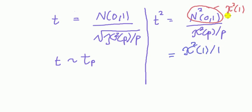If we divide the top by its respective degree of freedom one, anything divided by one is itself, so this is the same as that. And the bottom is chi-square p divided by p.